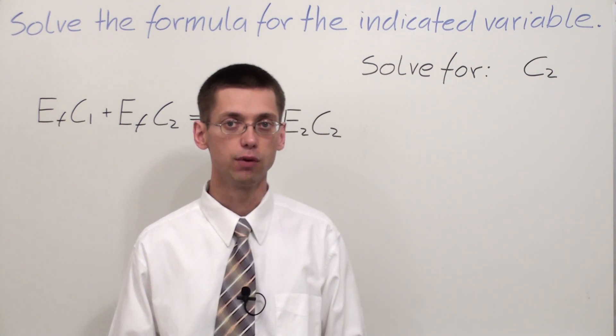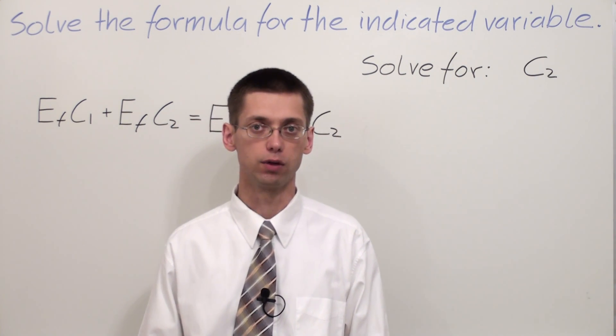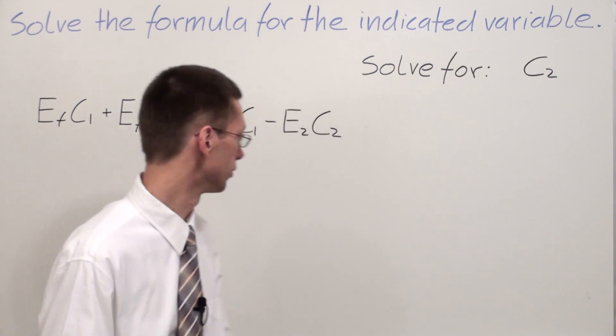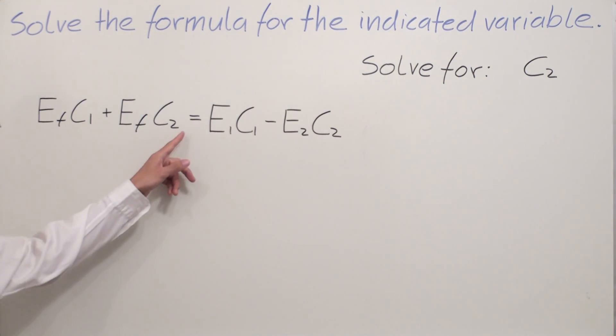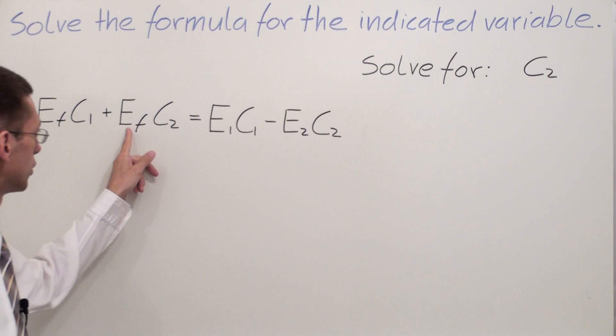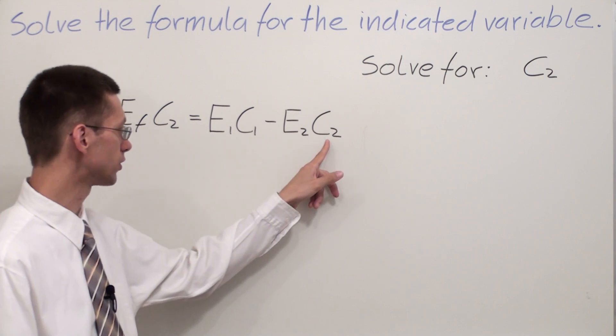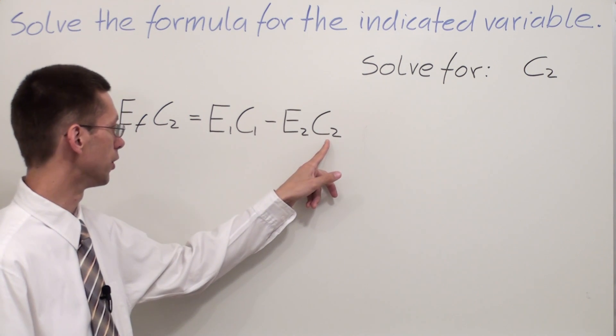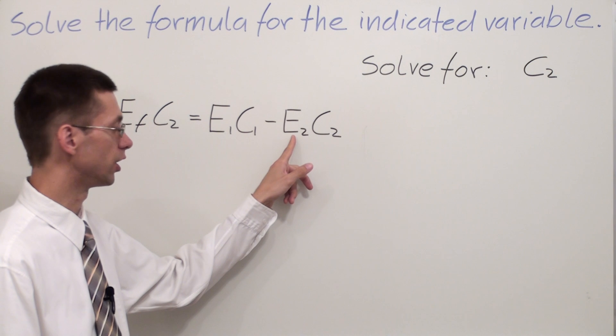First we have to navigate our variable. C2 is on the left side of the equal sign multiplied to EF, and C2 is on the right side of the equal sign multiplied to E2.